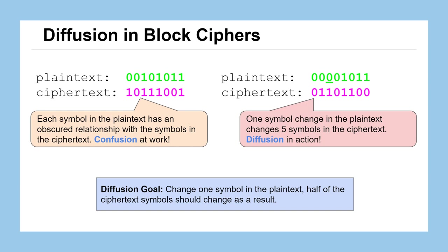However, here is an example of a block cipher. We have two very similar plaintexts where just one bit has been flipped — the underlined one has become a zero. But by applying the block cipher, we see that the ciphertext has changed quite a bit. In fact, five of those eight bits have been changed in the ciphertext just by flipping that one bit in the plaintext. This achieves our goal, where one symbol changing in the plaintext changes at least half of the symbols in the ciphertext.